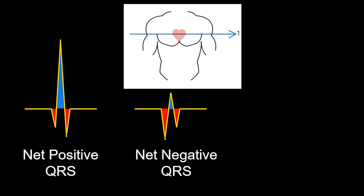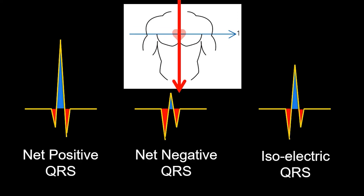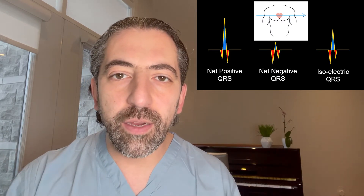Now, if the overall deflection is isoelectric, meaning the area under the QRS is equally positive and negative, that means that the electrical signal must be moving perpendicular to the lead. By looking where the QRS is positive and where it's negative, we can understand how the electrical signal is moving in the longitudinal plane of the heart.